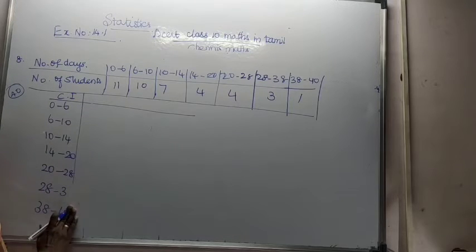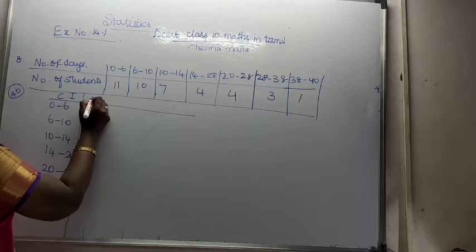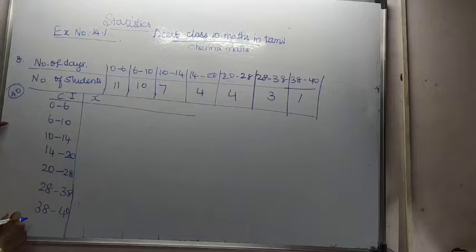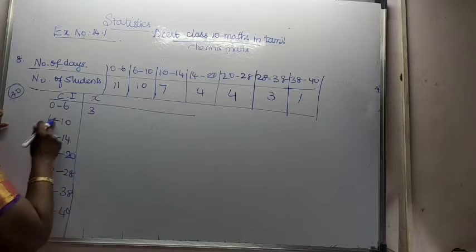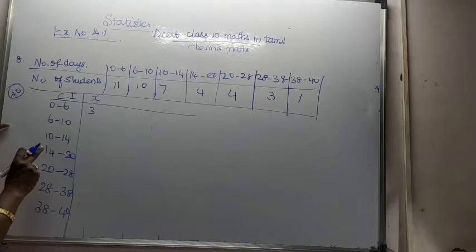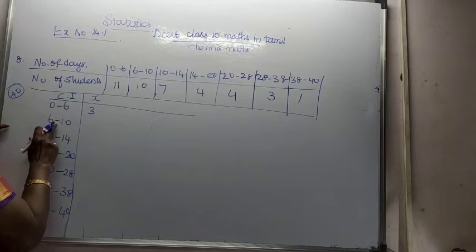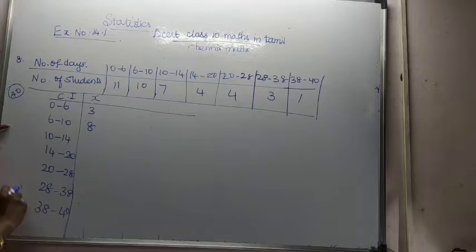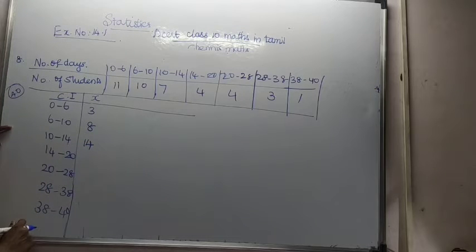Next, let's find x. Here, x will be 0 plus 6 divided by 2, which is 3. Then 6 plus 10 is 16, divided by 2 is 8. 10 plus 14 is 24, divided by 2 is 12. 14 plus 20 is 34, divided by 2 is 17.